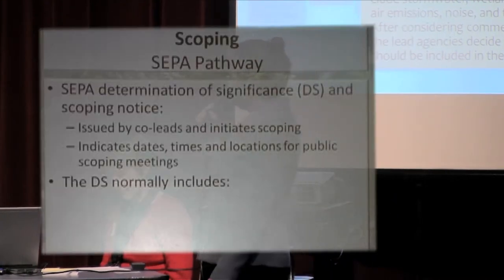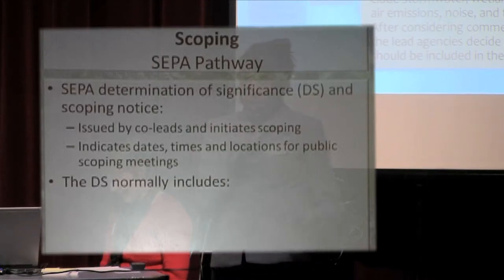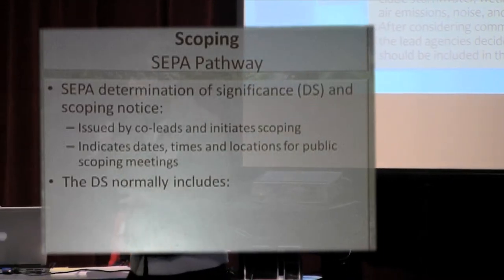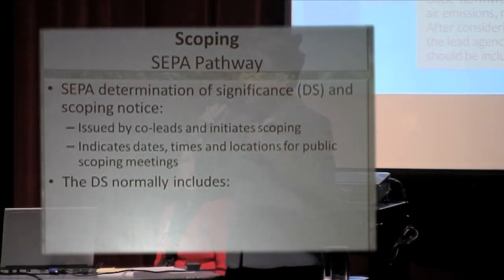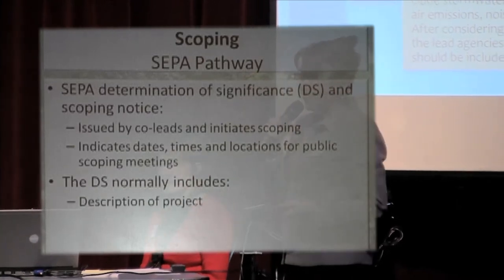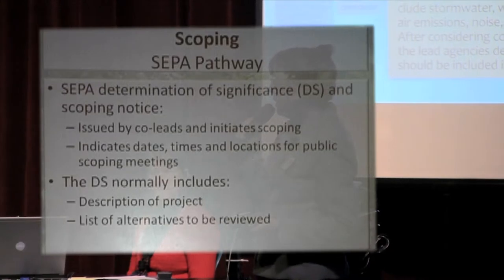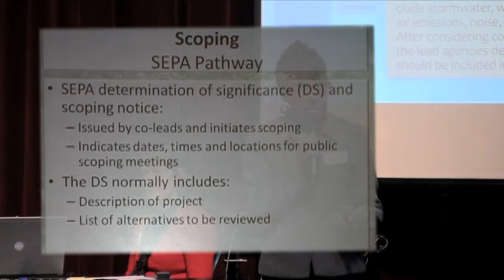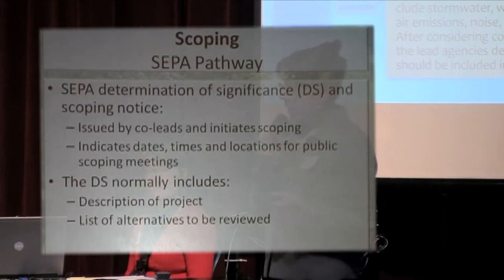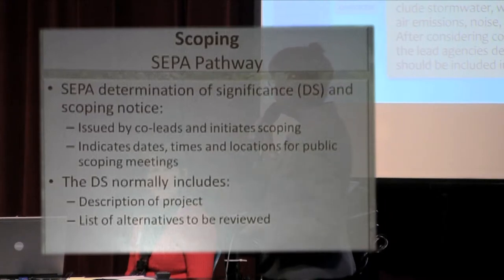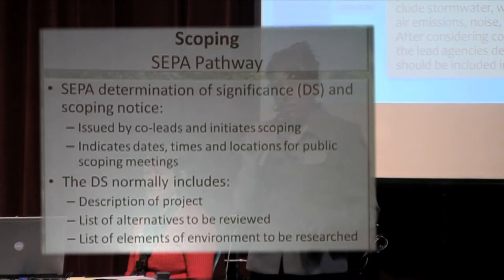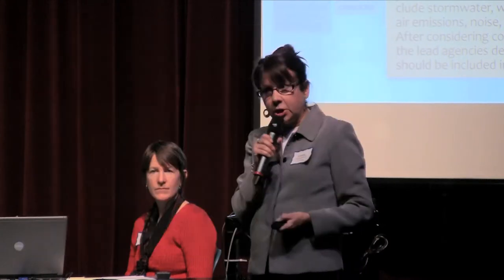The Determination of Significance normally includes more than just a piece of paper saying we've begun. It will have a description of the project, the list of alternatives to be reviewed — and those alternatives can be added to or changed — as well as what elements of the environment should be researched for the project.